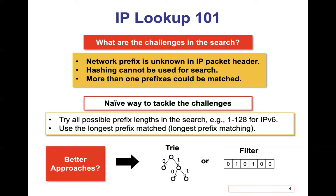More precisely, the IP packet header does not carry what the network prefix is. So in the routing table, all the prefixes are compared to the destination IP address, not the network prefix. Then all matched entries are gathered, and one of them is used to forward toward the next hop. Because the network prefix is unknown in the IP packet header, hashing — which is the most efficient way for searching — cannot be used. Also, it is possible to have more than one prefix matched. One naive way to address this problem is to try all possible prefix lengths. For example, for IPv6, we can try prefix lengths 1 to 128, then use the longest prefix matched among all the matches. This is called longest prefix matching.